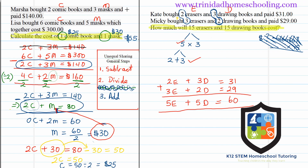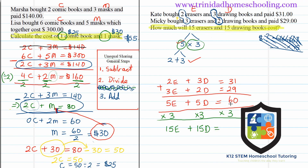Our next step is to multiply by 3 to get from 5 items to 15. Multiplying everything by 3: 5 × 3 = 15 erasers, 5 × 3 = 15 drawing books, and $60 × 3 = $180. So in just 5 lines and a little bit of critical thinking, we figured out the answer: 15 erasers and 15 drawing books cost $180.